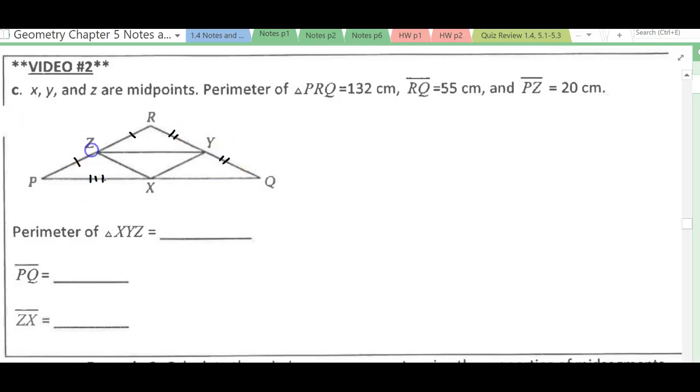And these pieces on the bottom are also going to be congruent. And we know the perimeter of triangle PRQ is 132 centimeters, so my big triangle, those three sides added up, is 132. We have that RQ is 55, so this is going to be 55 from here to here. And PZ is 20, so that's 20 from here to here.